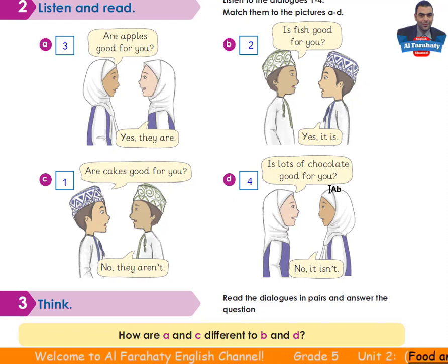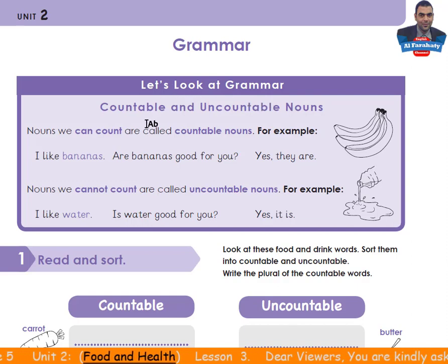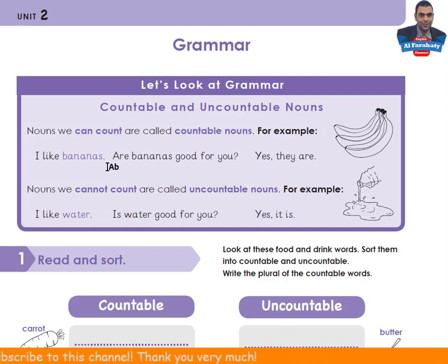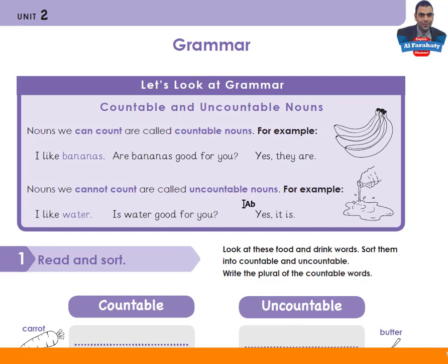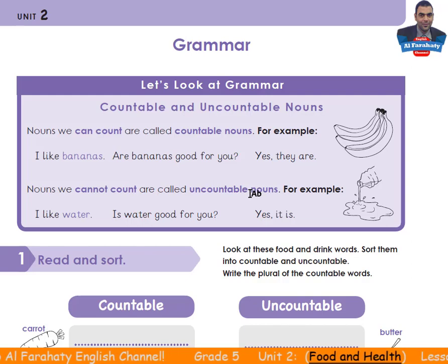Let's go to page 14 of your skills book — Grammar. Let's look at countable and uncountable nouns. Nouns we can count are called countable nouns. For example: I like bananas. Are bananas good for you? Yes, they are. So the word 'banana' is a countable noun. Nouns we cannot count are called uncountable nouns. For example: I like water. Is water good for you? Yes, it is. So the word 'water' is an uncountable noun.